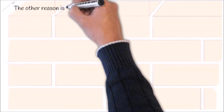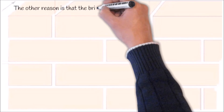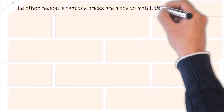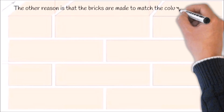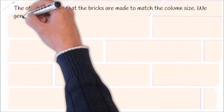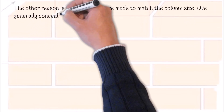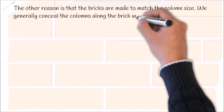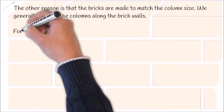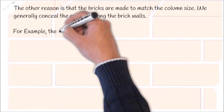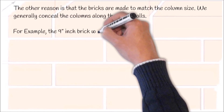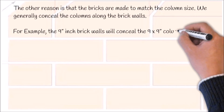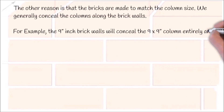Another reason is that the bricks are made to match the column size. We generally conceal the columns along the brick walls. For example, the 9-inch brick walls will conceal the 9x9 column entirely and give a pleasant appearance.